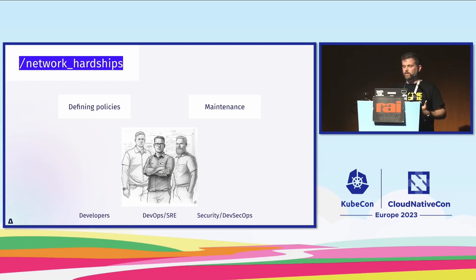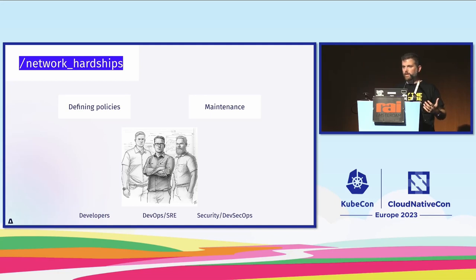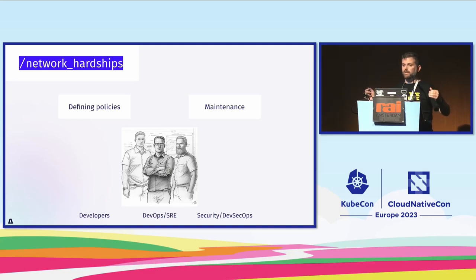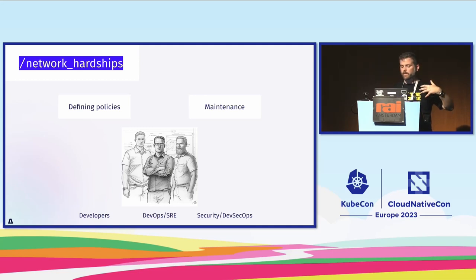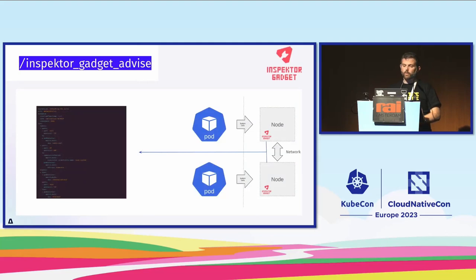If you invest time defining network policies once, you work really hard, but when you apply them you might break some application features, requiring back-and-forth with developers. Then the application changes again in two weeks and the policy breaks because it uses a new network path. It's very hard to maintain because it's spread across multiple functions in the organization with a lot of things that can break.